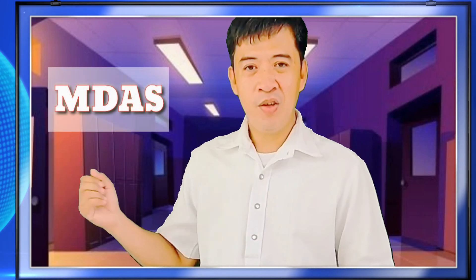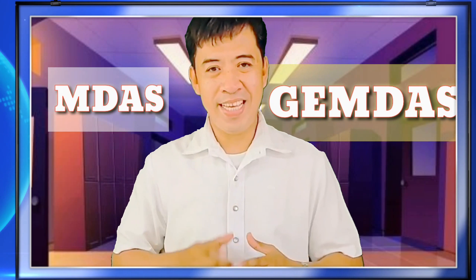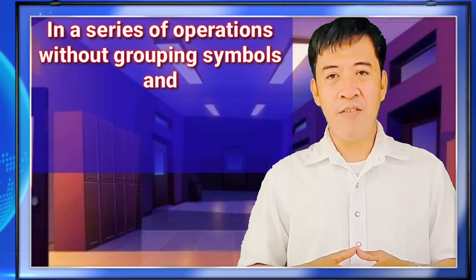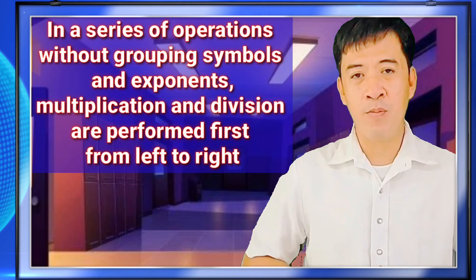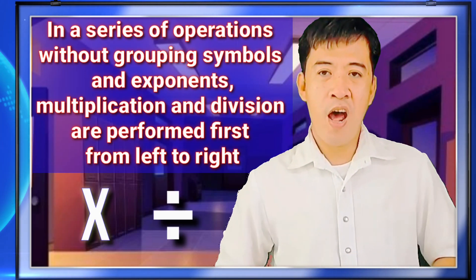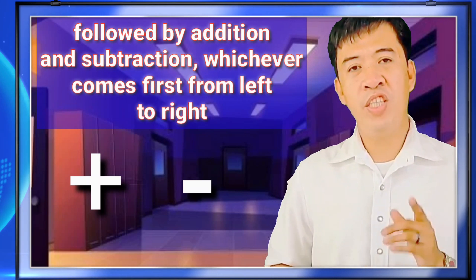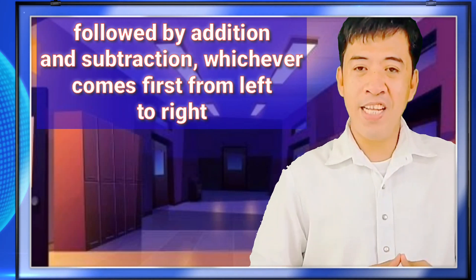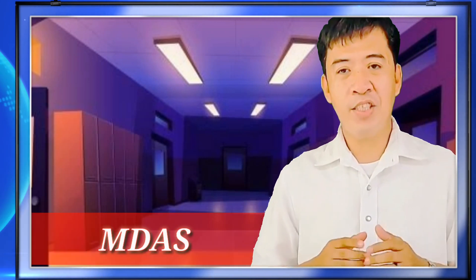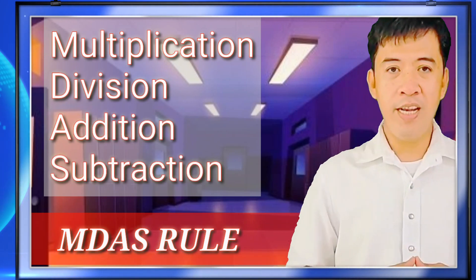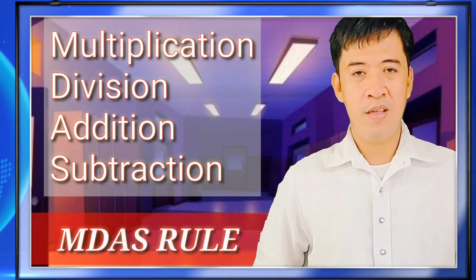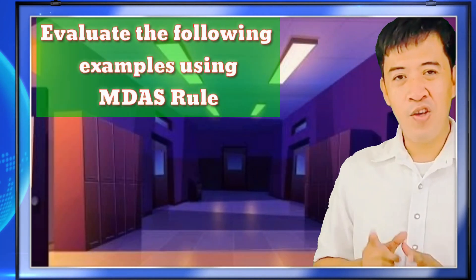I have a question for you. Have you heard the acronym GEMDAS? What does it mean? Today we will be dealing with evaluating numbers using the GEMDAS rule. In a series of operations without grouping symbols and exponents, multiplication and division are performed first from left to right, followed by addition and subtraction, whichever comes first from left to right. This is what we call the GEMDAS rule: multiplication, division, addition, and subtraction. Let's evaluate the following examples using the GEMDAS rule.